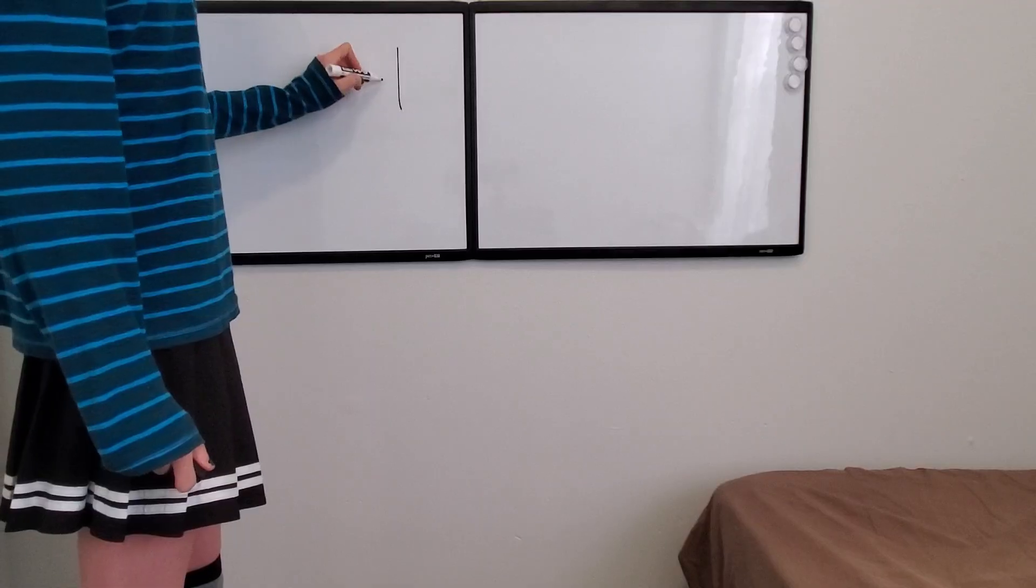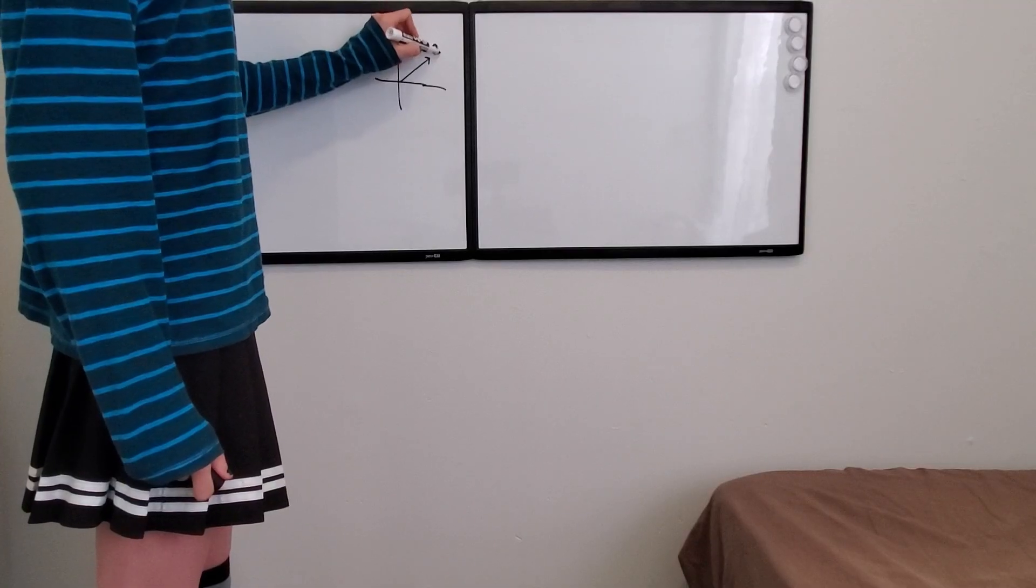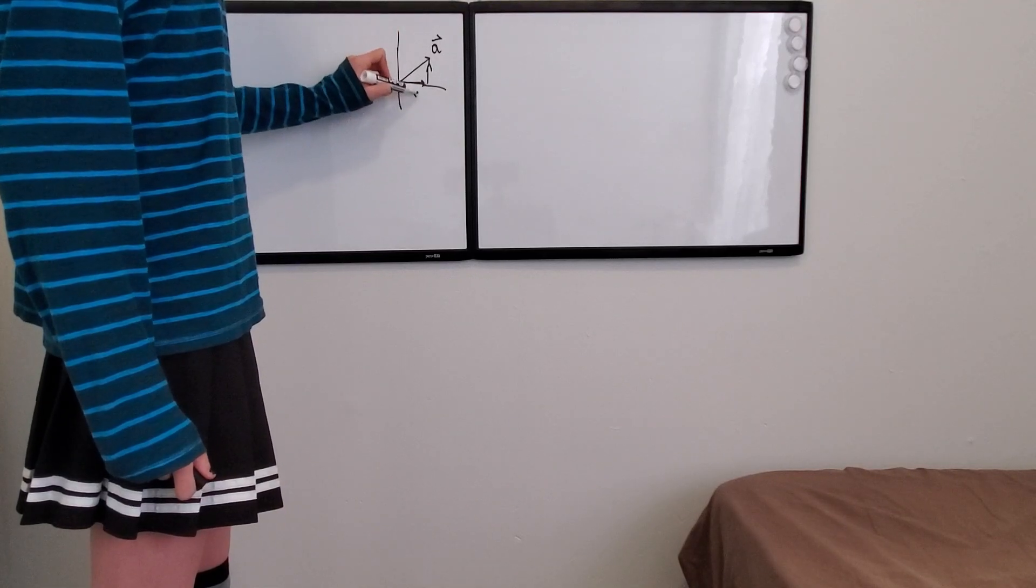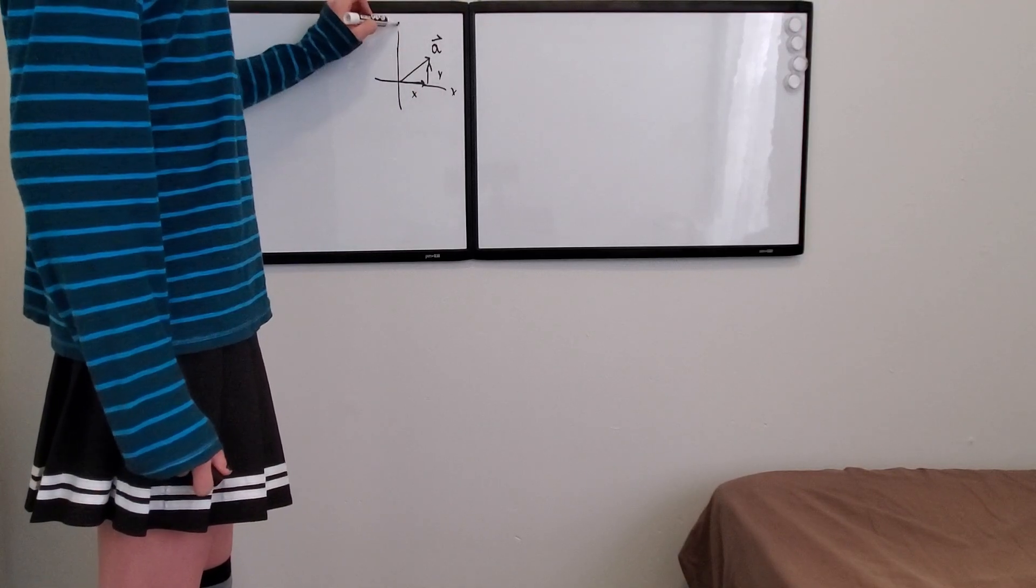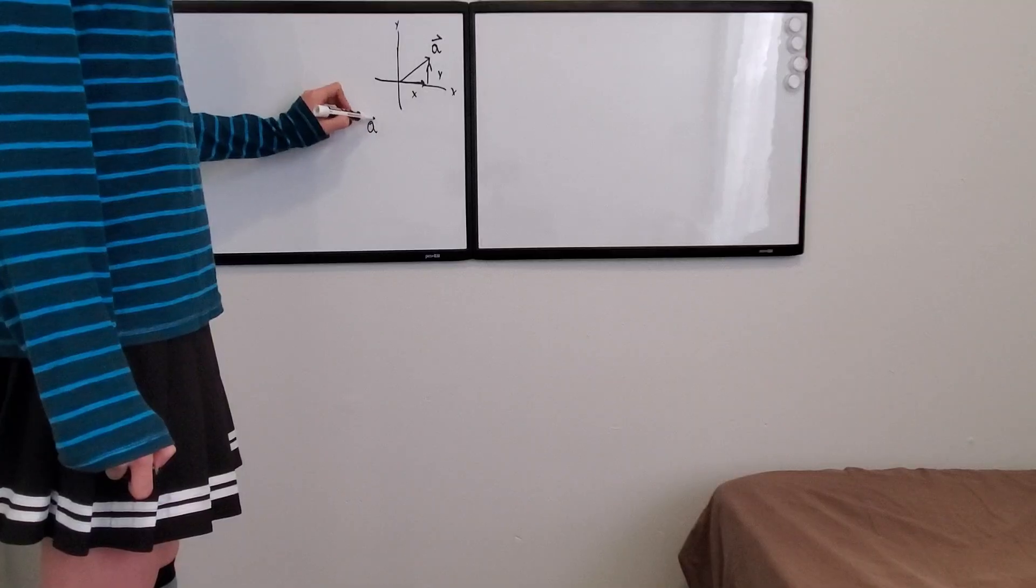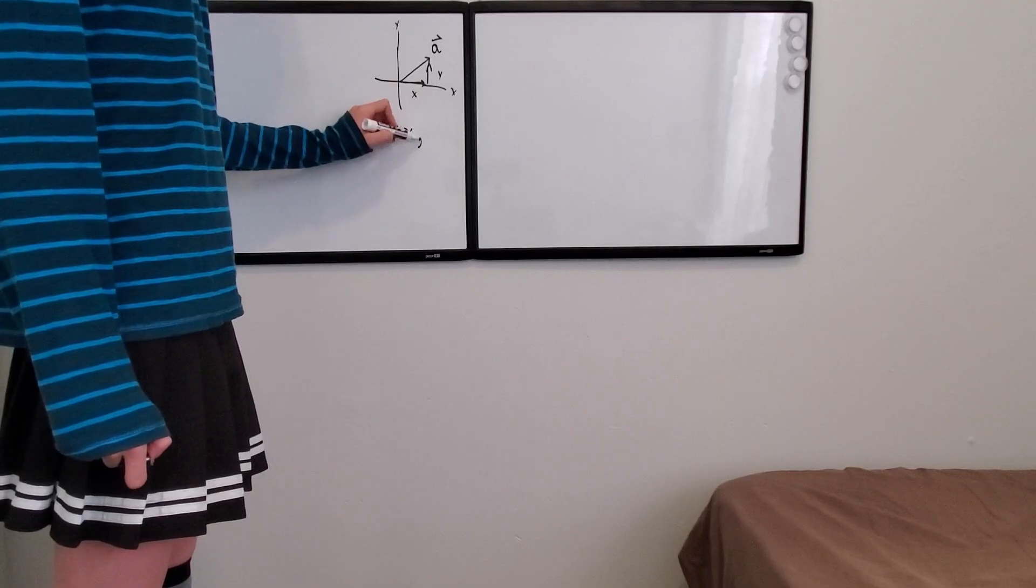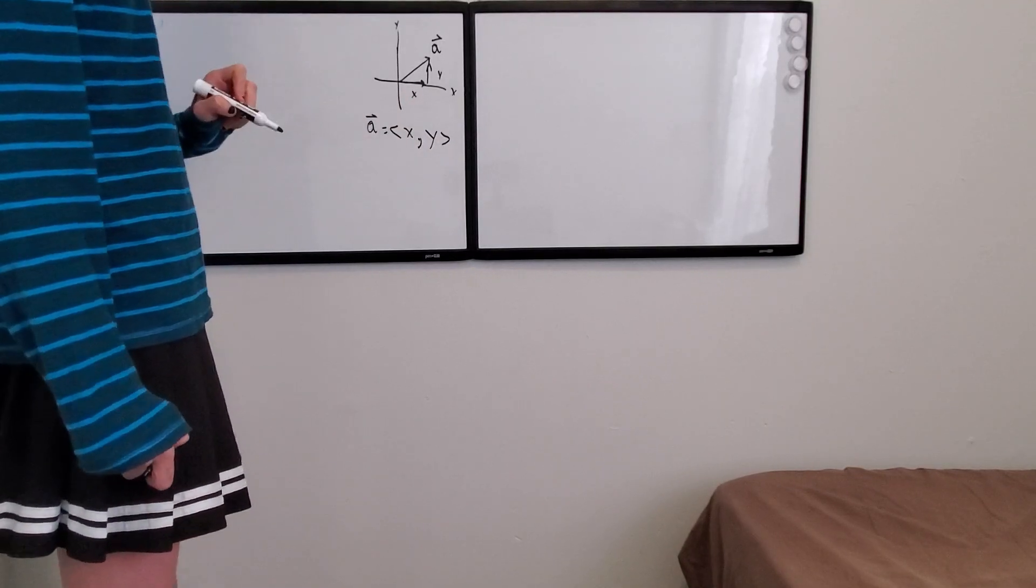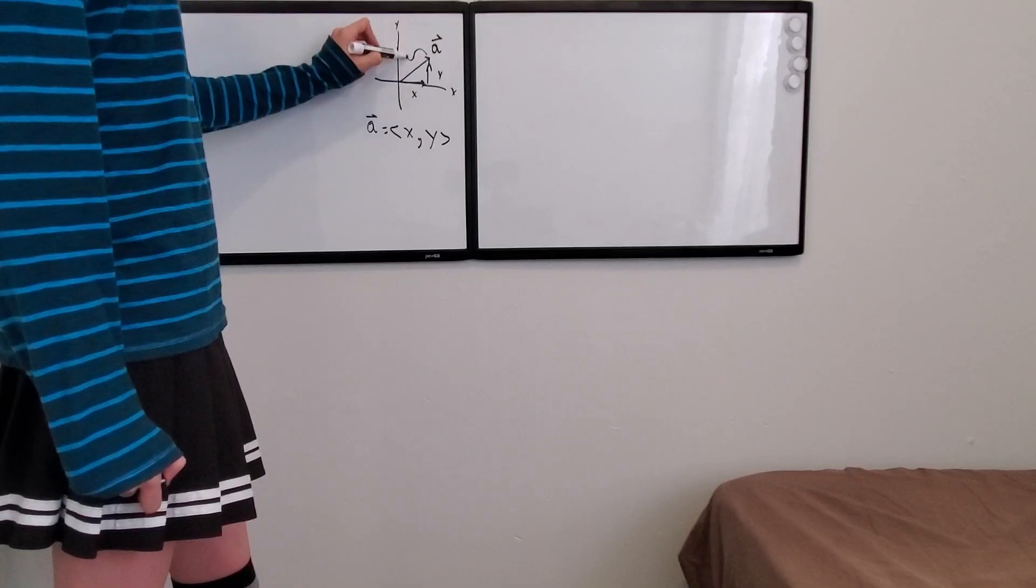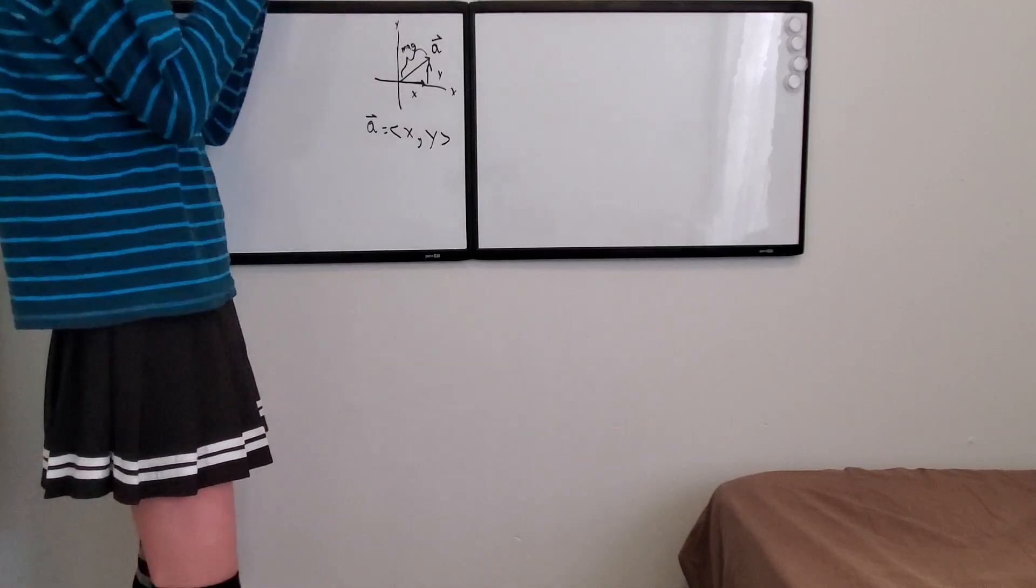So, the basics of vectors is that they have a magnitude and a direction. I'm just going to call this vector a. It's got an x component and a y component. So there's the x, there's the y. I'm going to name this the x and the y axis. Mathematically, you write these like this: a is equal to angle bracket x, and then y. It's got this little arrow on the top. It shows that it's a vector. The magnitude is just the length of the vector.